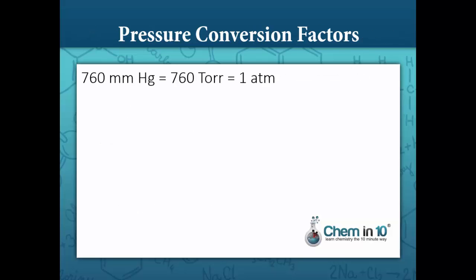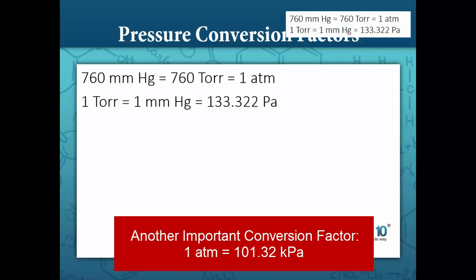Here are the conversion factors. 760 millimeters mercury is the same thing as 760 torr. They changed the name to make it shorter than millimeters mercury, and called it torr in honor of Torricelli, the creator of the first barometer. So 760 millimeters mercury equals 760 torr, which equals 1 atmosphere. And 1 torr equals 1 millimeter mercury, which equals 133.322 pascals.